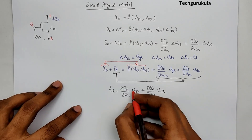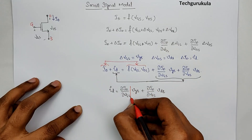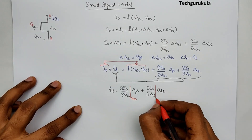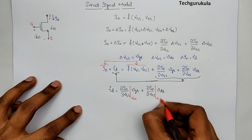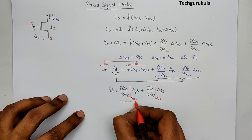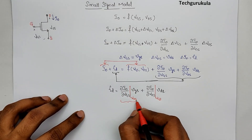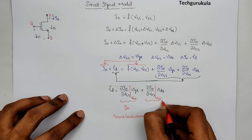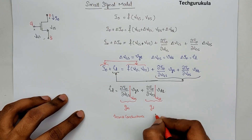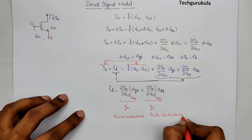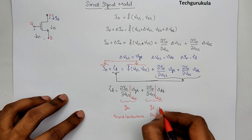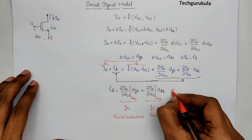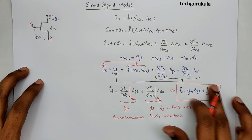A very important point to note: the partial derivative with respect to VGS is evaluated at a given VDS, and the partial derivative with respect to VDS is evaluated at a given VGS. We define two terms: the first partial differentiation at a given VDS we call GM, the transconductance; and the second term we call GD, the drain conductance. In most cases, we write GD equals 1 over RD, where RD is the drain resistance.